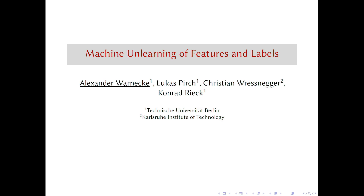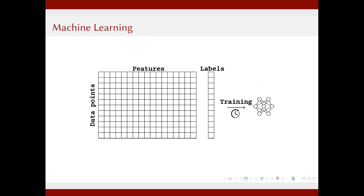Before starting with machine unlearning, I want to briefly recap what a machine learning task looks like. A machine learning task is usually composed of a dataset made up of data points, where each data point has a set of fixed features and a label that we want to predict. With this information, you can train a model on this dataset to predict labels of unseen data points, and depending on your model and dataset, training can take a lot of time.